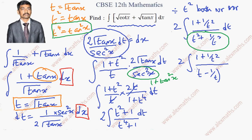If we expand (t − 1/t)², we get t² + 1/t², but we also get an extra −2 term. To compensate, we add +2, giving (t − 1/t)² + 2 = t² + 1/t². I'm choosing the minus sign here purposely because we have a plus sign in the numerator.